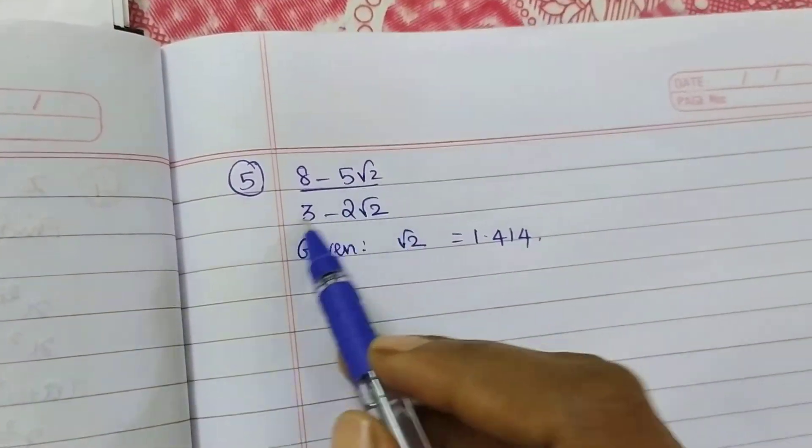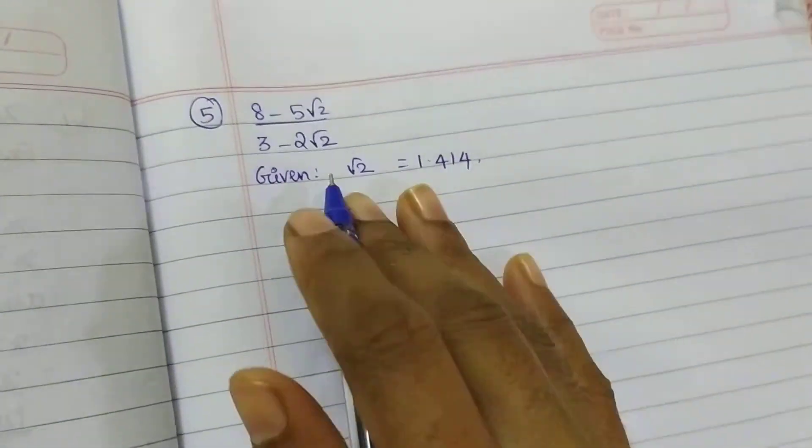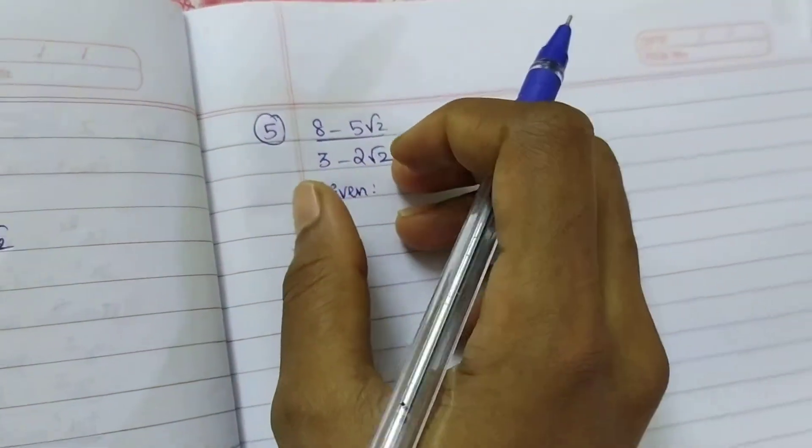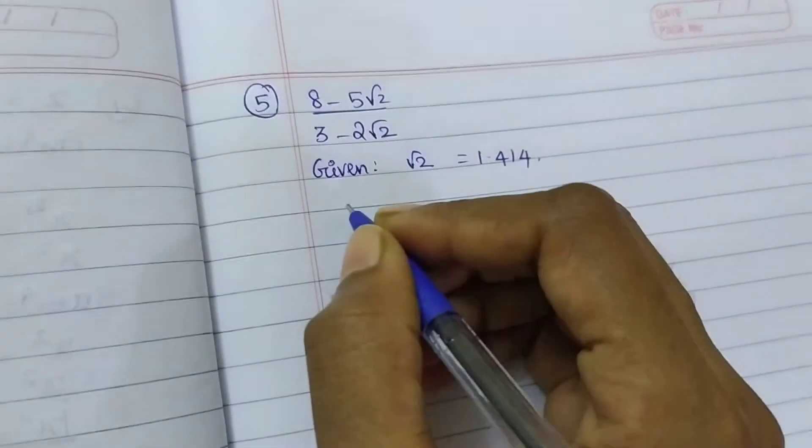First term, 8 minus 5 root 2, 3 minus 2 root 2. So the given root 2, find out the conjugate value, find out the rationalized value in the denominator, then you can substitute your root 2 value.